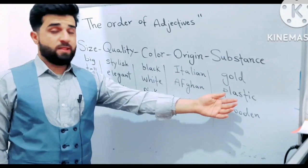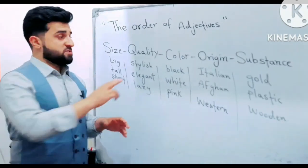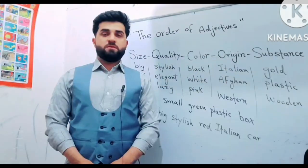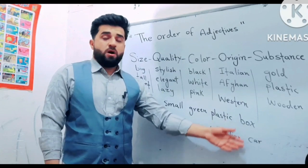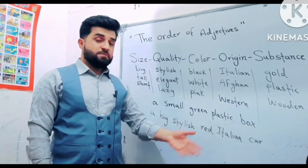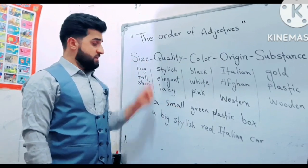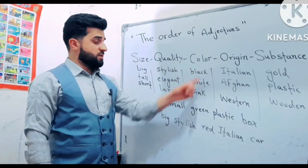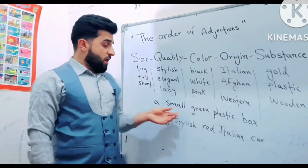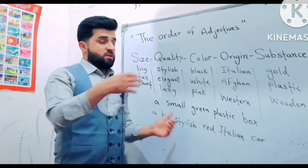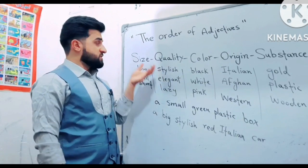Gold, plastic, wooden. Now we can say 'green small plastic box.' We must use the correct order when we count the adjectives — when color comes, then substance comes last.